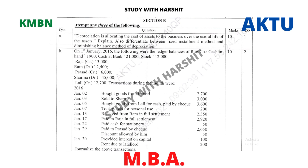Section B: Attempt any three questions out of the five questions. Question A: Depreciation is allocating the cost of assets to the business over the useful life of the assets. Explain and also differentiate between the fixed installment method and the diminishing balance method of depreciation.